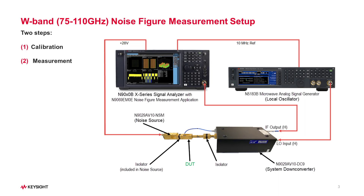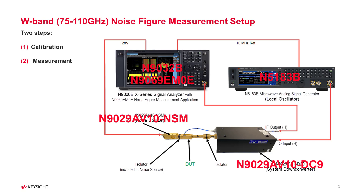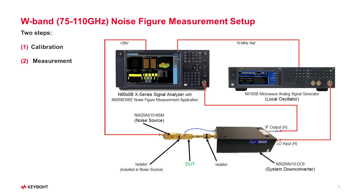Let's look at the setup for the W-Band noise figure measurement. It uses the Keysight N9032B Signal Analyzer with N9069 EM0E noise figure application, N5183B Signal Generator SLO, VDI noise source, and System Down Converter for 75 GHz to 110 GHz. The DUT is an amplifier.